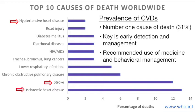Over three-quarters of the deaths took place in low- and middle-income countries. The World Health Organization lists tobacco use, unhealthy diet and obesity, physical inactivity, and harmful use of alcohol as behavioral risk factors for the onset of cardiovascular disease. Addressing these risk factors is a first step in preventing cardiovascular disease.